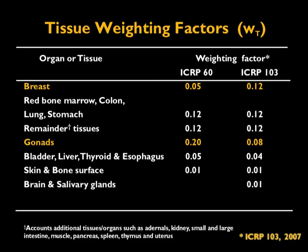The tissue weighting factors have changed over time. The currently used values are based on ICRP 103 — the International Commission on Radiological Protection — an advisory body that examines research and updates its reports periodically. In the previous ICRP 60, the breast had a tissue weighting factor of 0.05 and the gonads 0.20. In the current ICRP 103, published in 2007, the breast weighting factor is higher at 0.12, while the gonads are lower at 0.08.